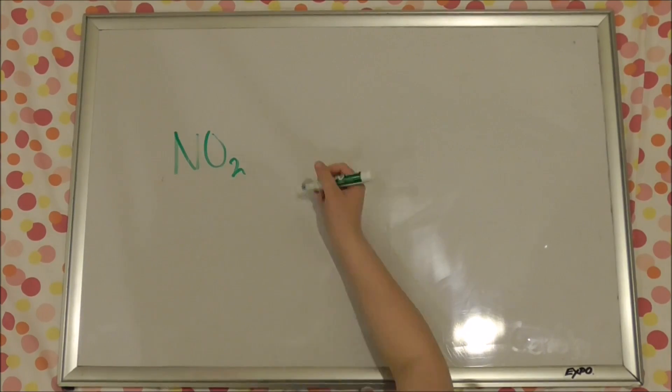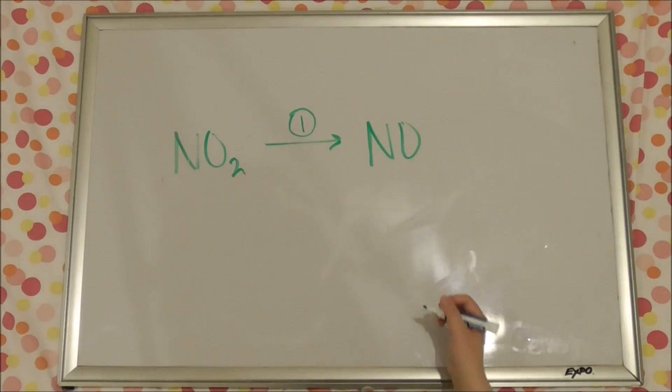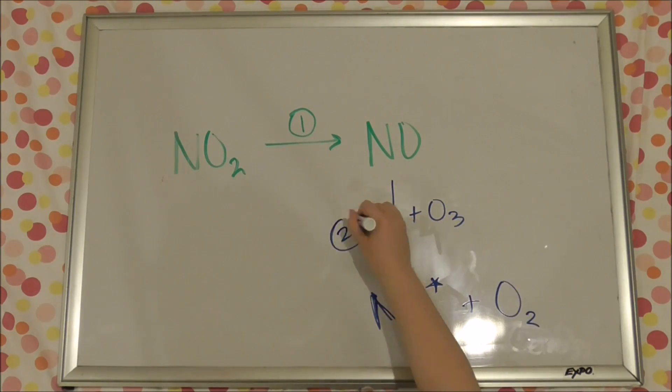This method can also be used to detect NO2 concentrations. However, the NO2 has to be turned into NO first, before it can react with the ozone to create NO2 in an excited state, and so on.